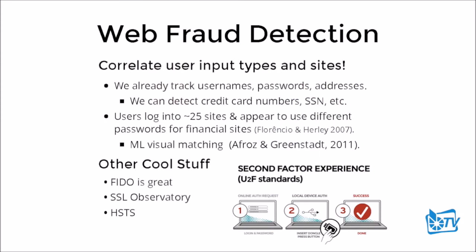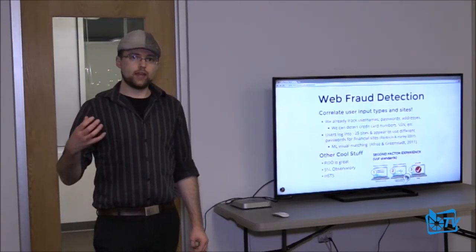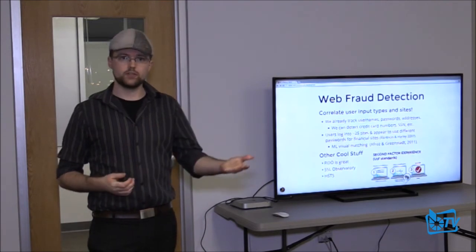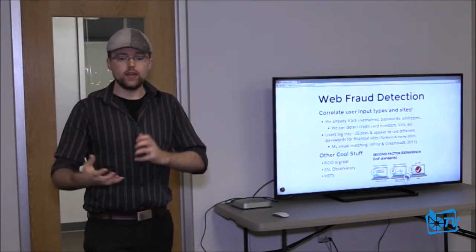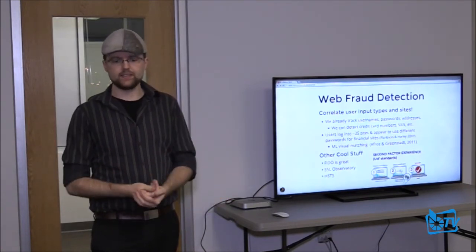This is an area for future research. It basically comes down to correlating user input types with sites. We already track usernames, passwords, and addresses that have been visited before. We can detect input of credit card numbers and social security numbers. Research shows that people log into about 25 sites and appear to use different passwords for financial sites. There's a lot of good work on machine learning and visually matching sites — so that you could figure out which banking websites a user logs into regularly, do visual analysis, and if someone logs into a site that looks like their bank but is clearly a different URL, show some sort of warning.